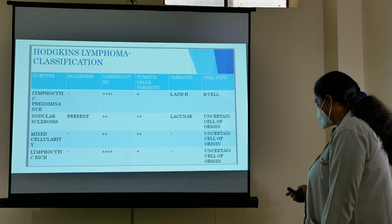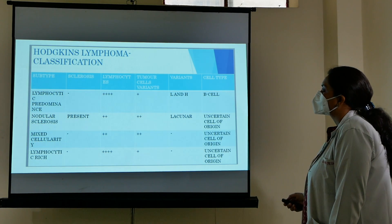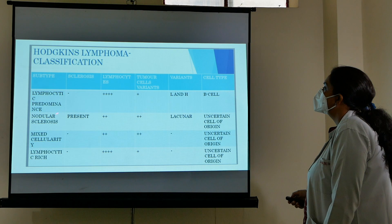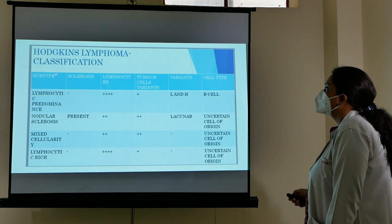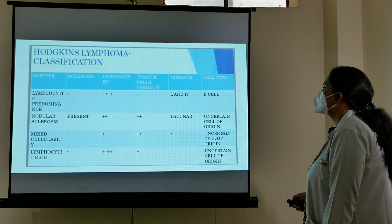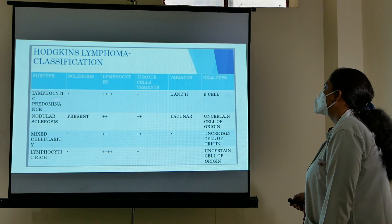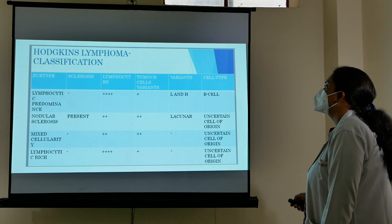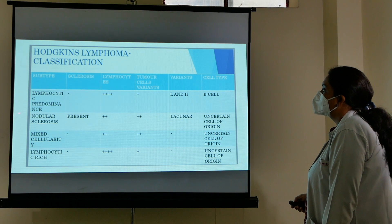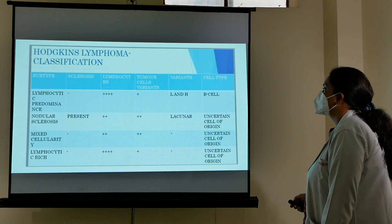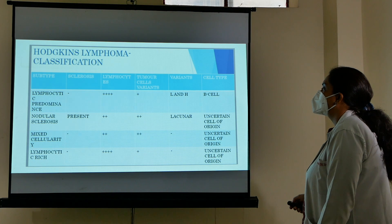The four subtypes of classical Hodgkin's lymphoma are: lymphocytic predominance, nodular sclerosis, mixed cellularity, and lymphocyte-rich. In lymphocytic predominance, as the name suggests, there are a large number of lymphocytes. In nodular sclerosis, there is sclerosis with nodular formations — the cells are arranged in nodules surrounded by sclerosing areas.